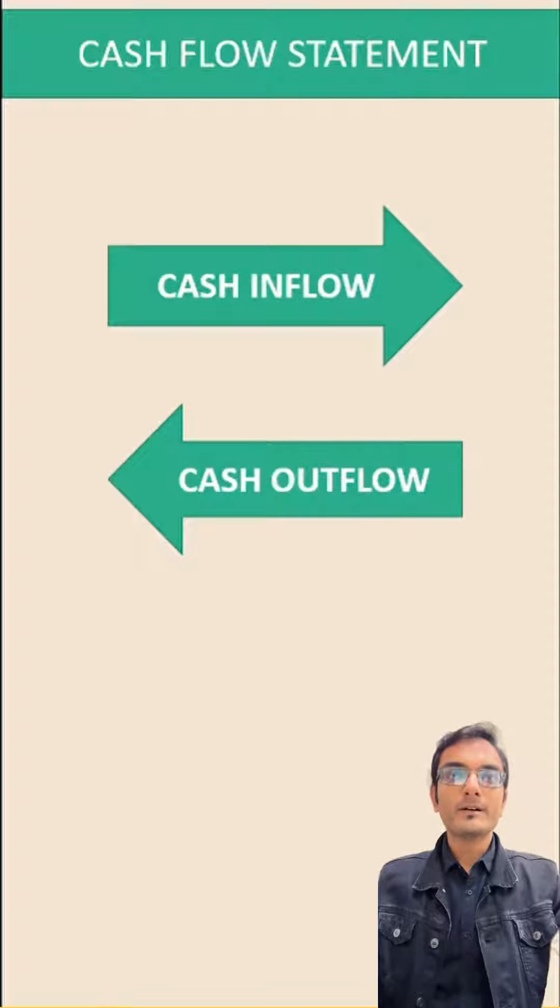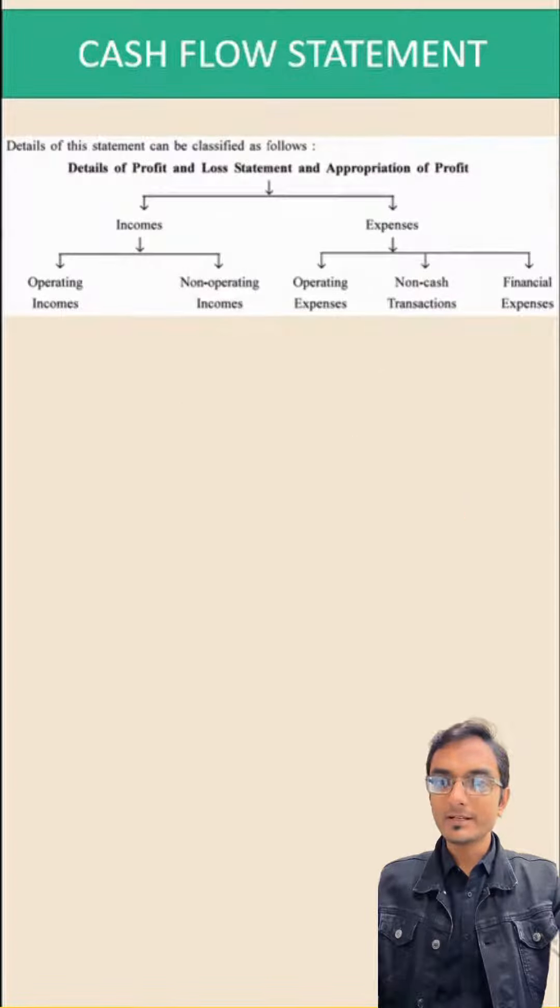There are two types of things that we are recording in profit and loss statement: one is income and second one is expenses. There are two types of income: operating income and non-operating income. Expenses are of three types: operating expenses, non-cash transactions, and financial expenses.